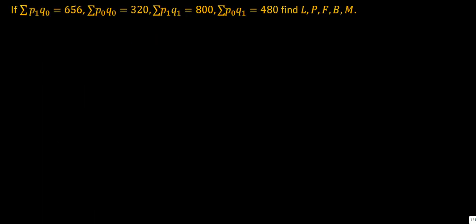Our second sum: if sigma P1Q0 equals 656, sigma P0Q0 equals 320, sigma P1Q1 equals 800, and sigma P0Q1 equals 480. Question is: find Laspeyres, Paasche, Fischer, Bowley, and Marshall index numbers. It is also a very easy sum.